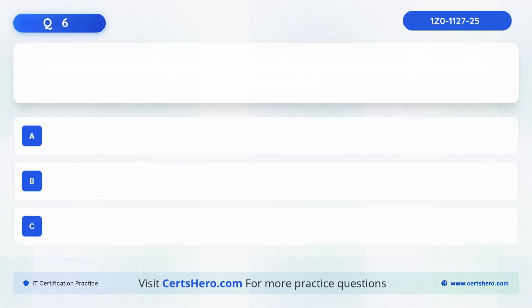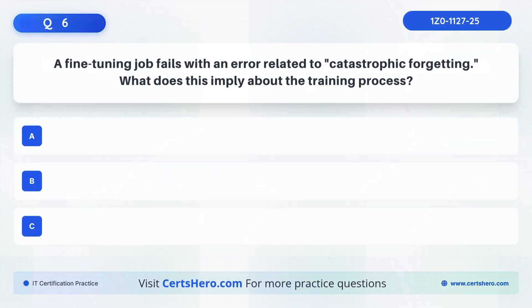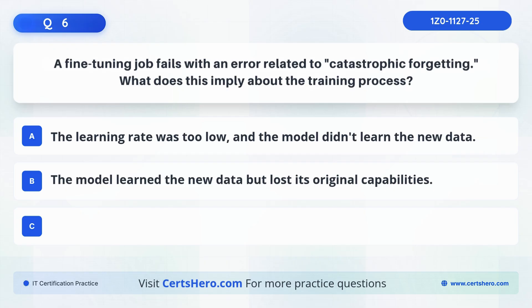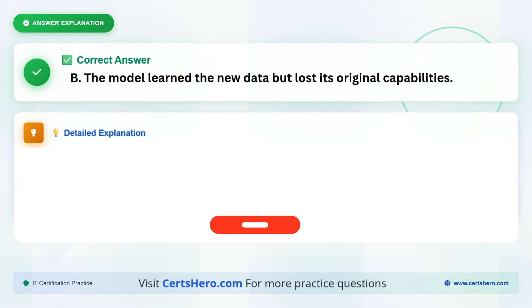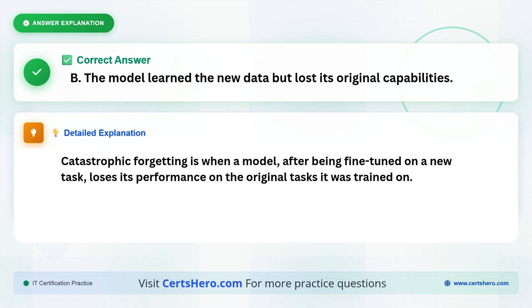Question 6. A fine-tuning job fails with an error related to catastrophic forgetting. What does this imply about the training process? Is it, the learning rate was too low, and the model didn't learn the new data? The model learned the new data, but lost its original capabilities? Or, the training dataset contained too much personally identifiable information? The correct answer is B. The model learned the new data, but lost its original capabilities. Catastrophic forgetting is when a model, after being fine-tuned on a new task, loses its performance on the original tasks it was trained on.